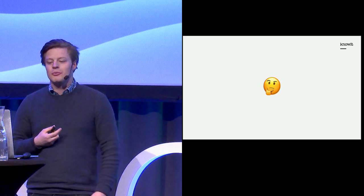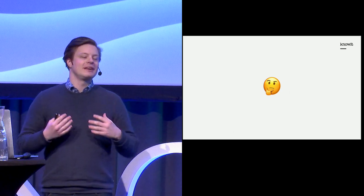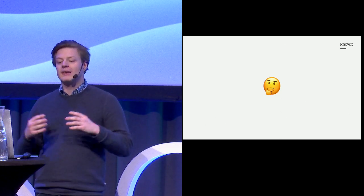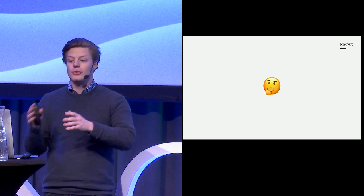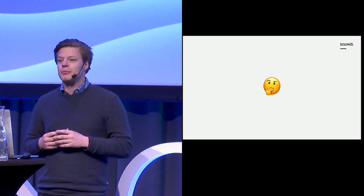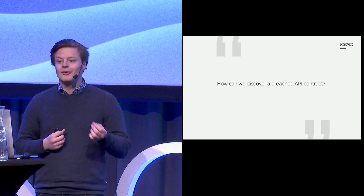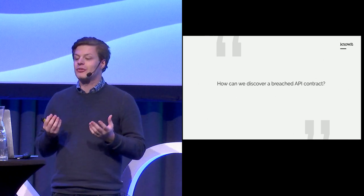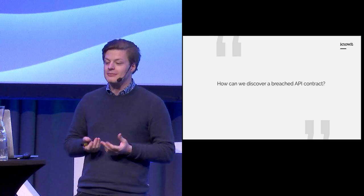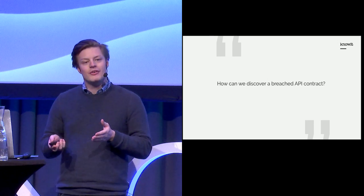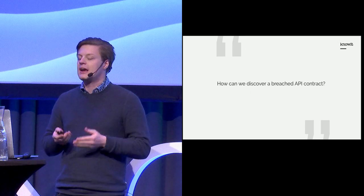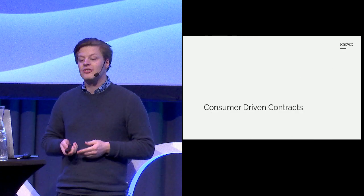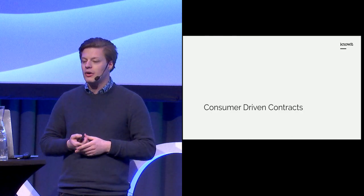One bad solution is to start an instance of the provider service on my development machine and run all integration tests from every consumer against that local instance. But that requires knowing how to find, download, and start every consumer that uses your application. So we need to find a better way of discovering breaches in existing API contracts — and a possible solution is consumer-driven contracts.